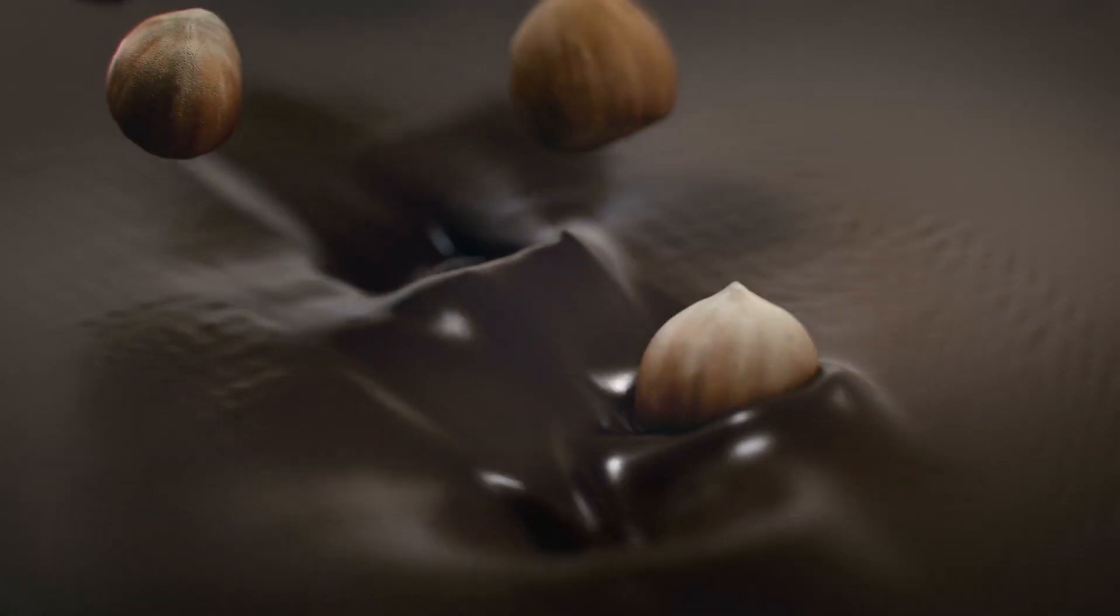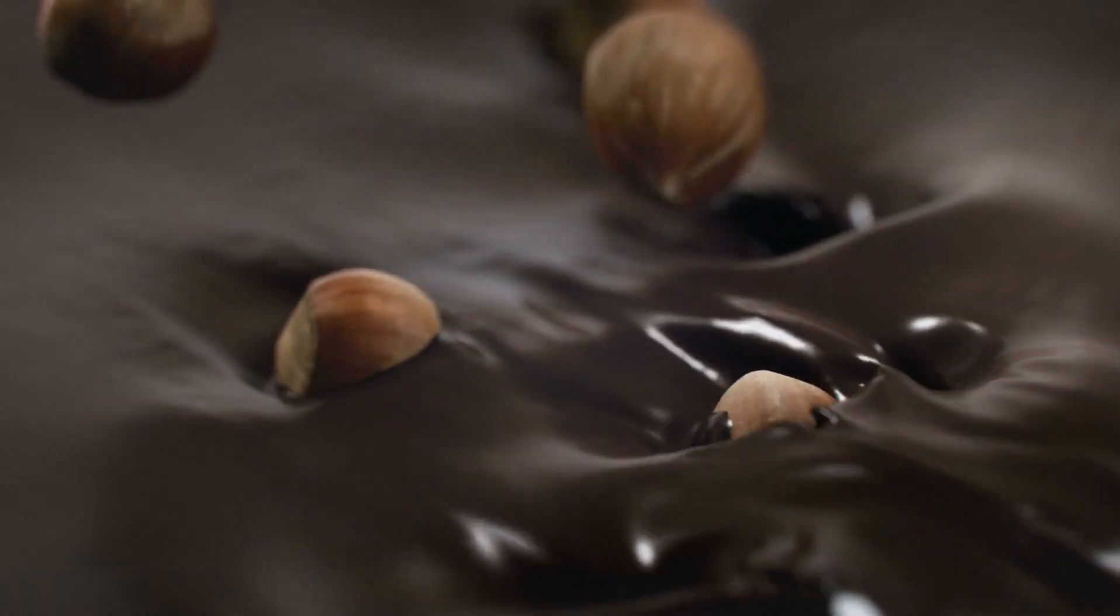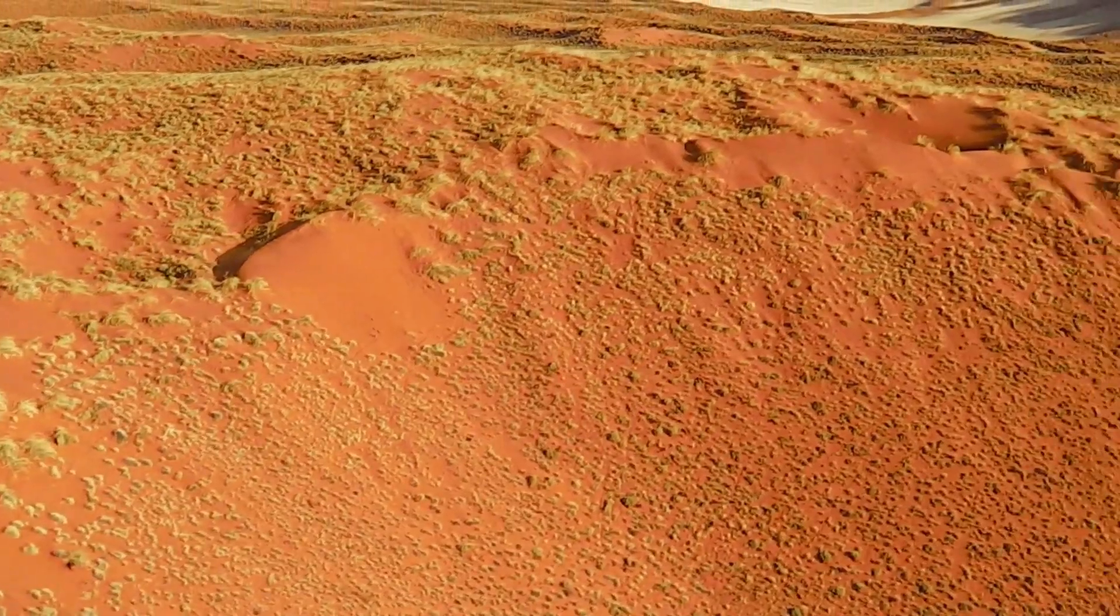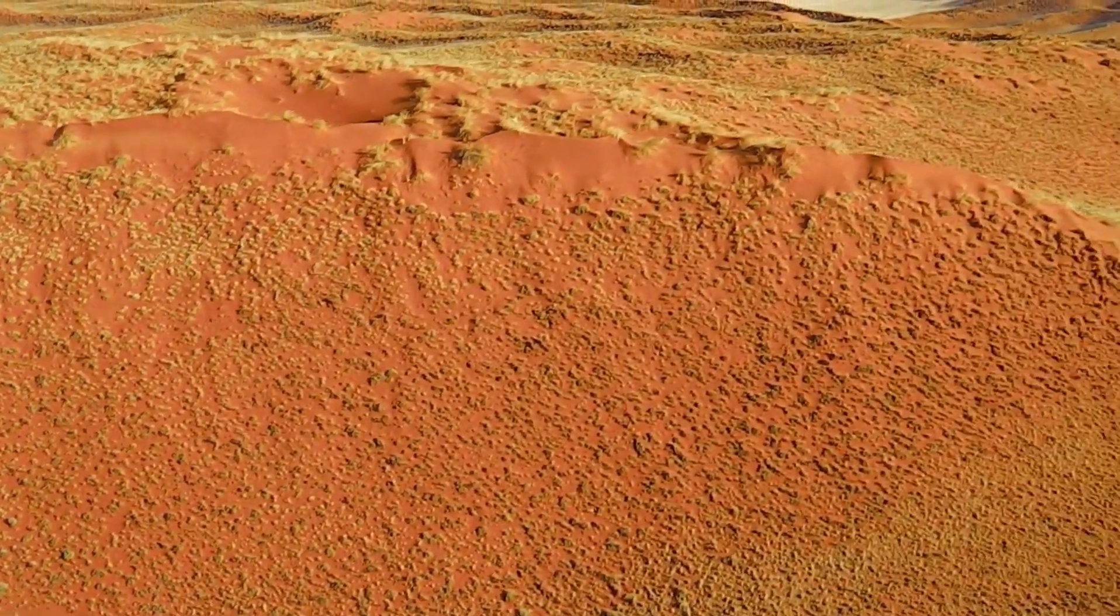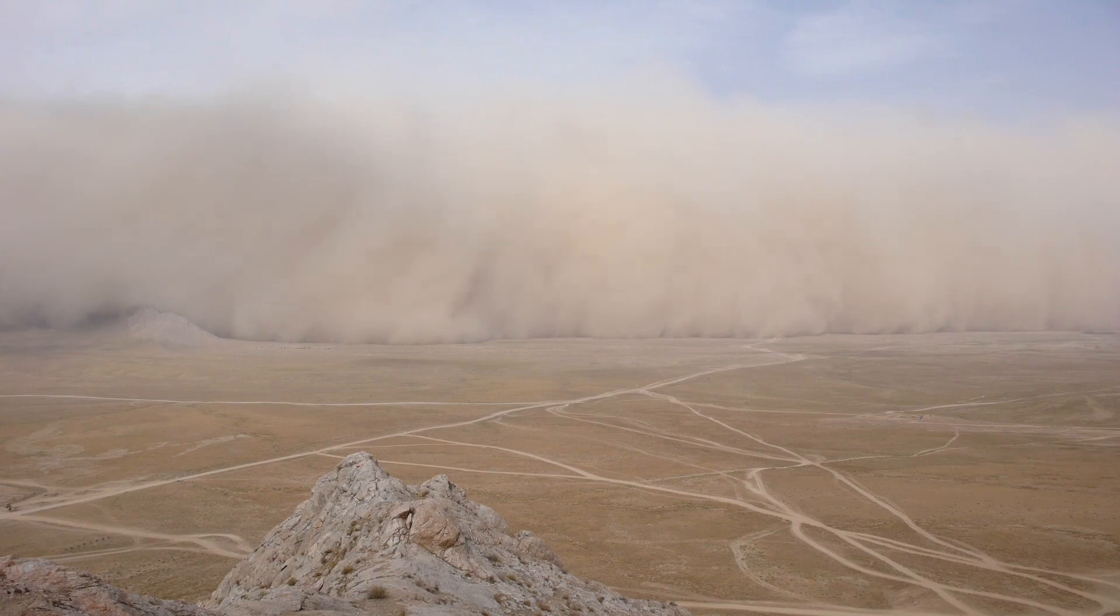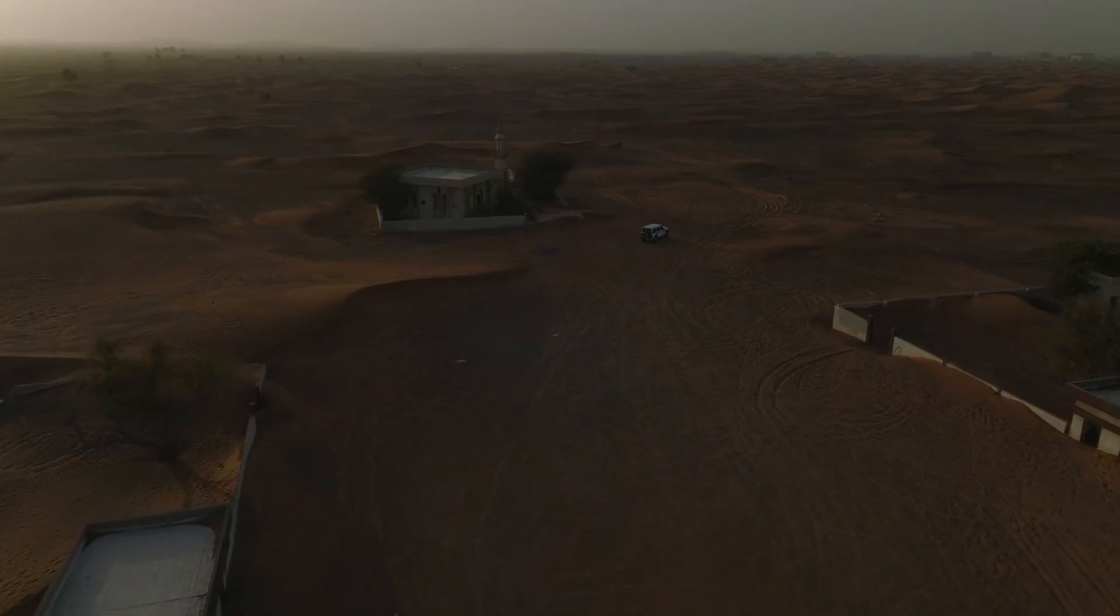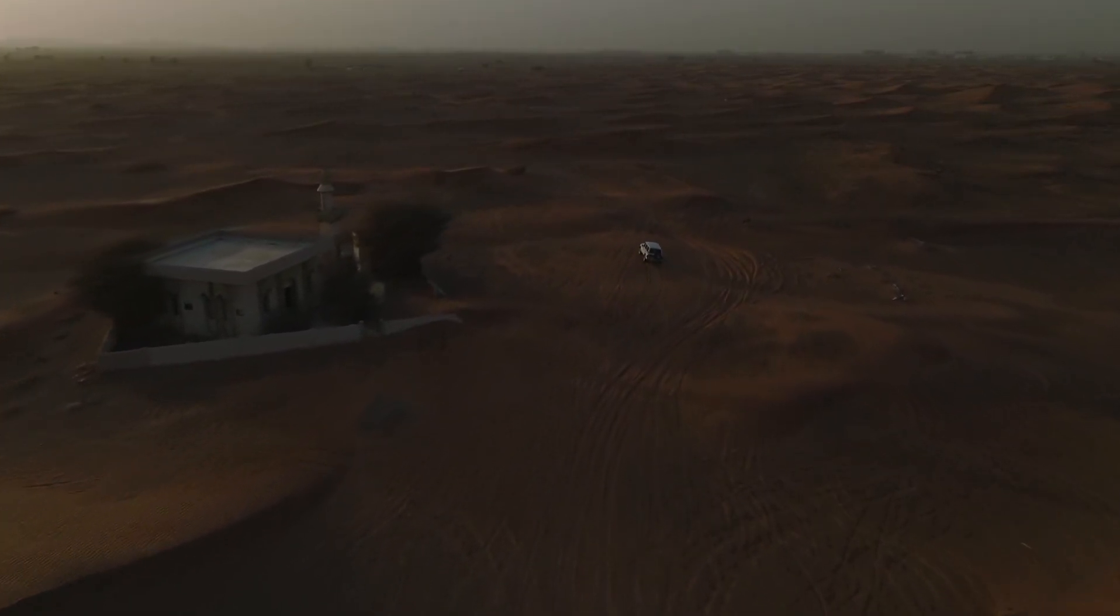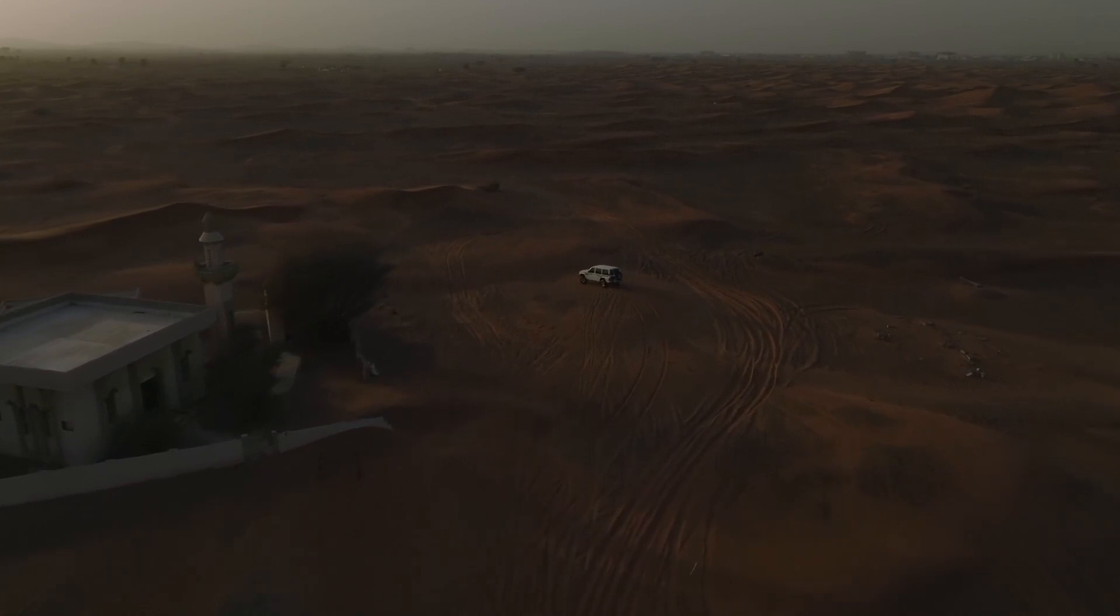One time-lapse shows a global dust storm enveloping the planet, obscuring surface features, while Mars's two small moons, Phobos and Deimos, can be seen zipping around the planet in the background. Phobos completes an orbit around Mars in only 7.5 hours, making it the only Moon in the solar system to orbit faster than its planet's day.